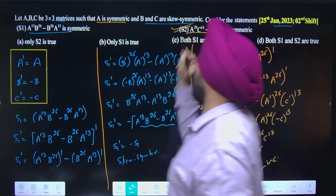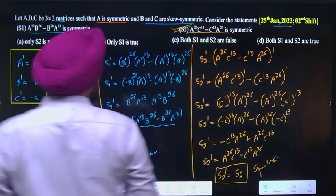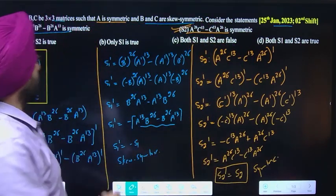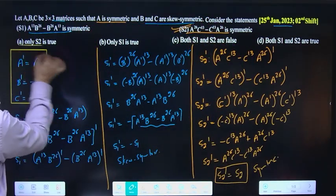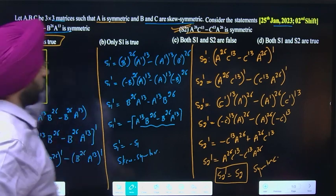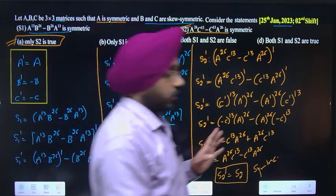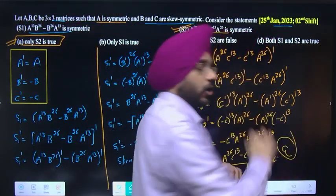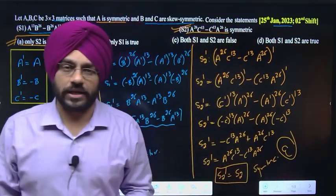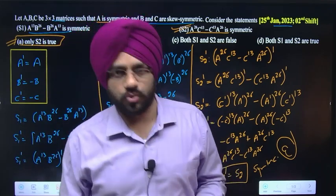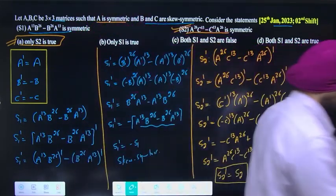S2 transpose = S2, which means S2 is a symmetric matrix. So second condition is correct and first is wrong. S2 is correct, means only option A is the final answer — only S2 is true. Clear hai students, thank you.